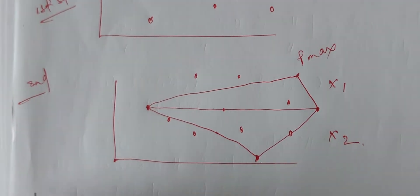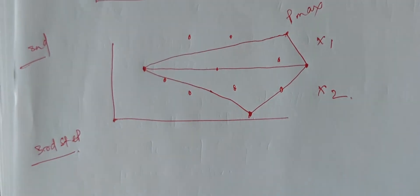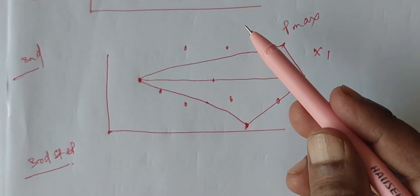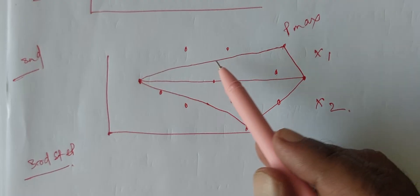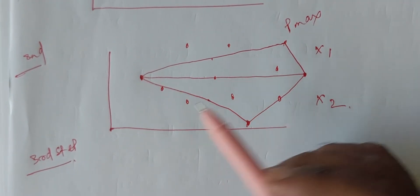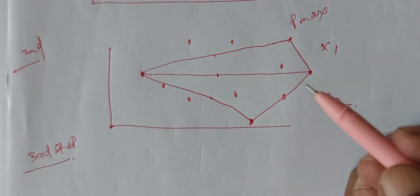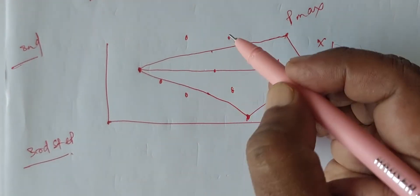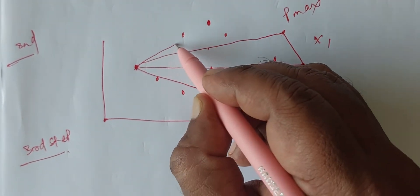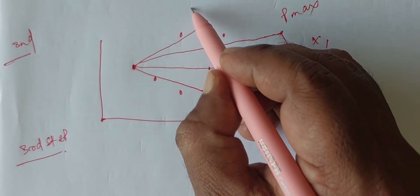After that, on the third step, we will calculate what are the nodes left outside the connecting line. From there we will again calculate which is the maximum distance occurring point. Suppose this is the maximum distance point. So again, we will consider it Pmax.